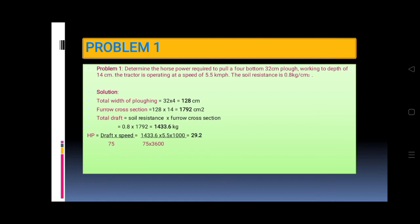Total draft equals soil resistance times furrow cross-section equals 0.8 times 1792 equals 1433.6 kilogram. HP equals draft times speed divided by 75 equals 1433.6 times 5.5 times 1,000 divided by 75 times 3,600 equals 29.2.